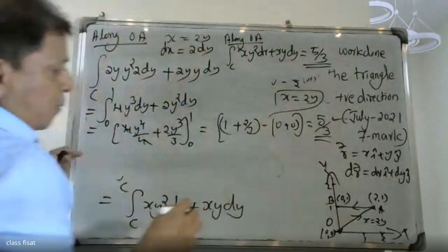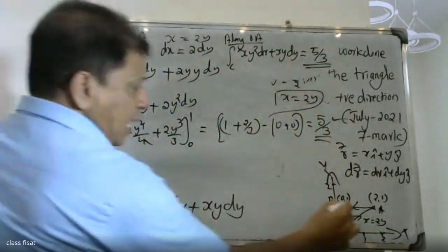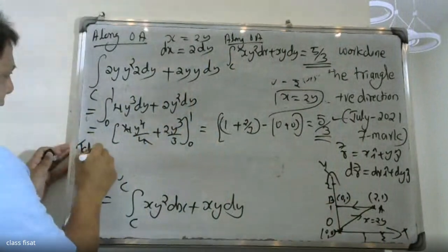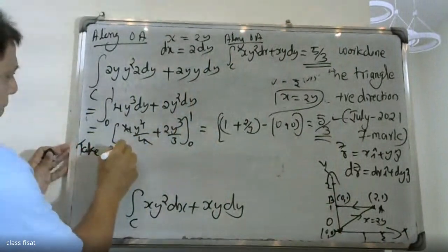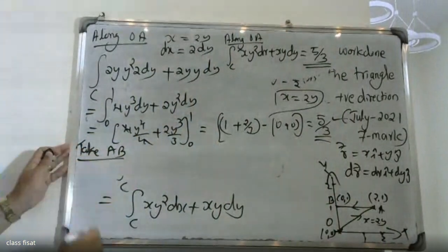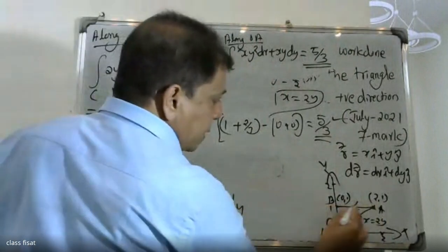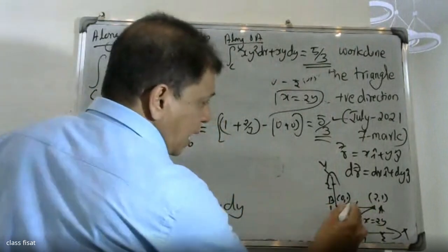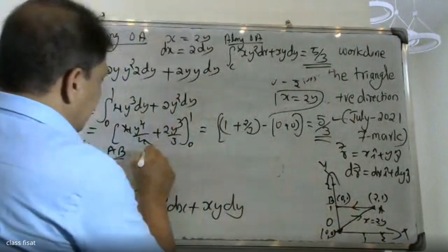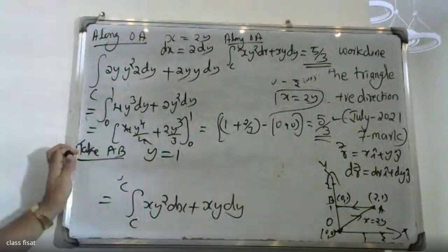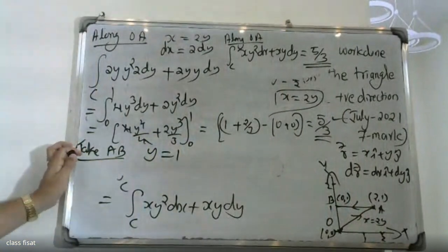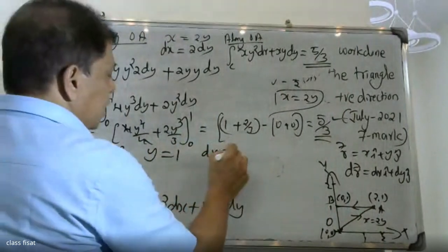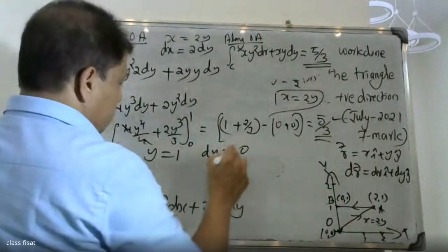Now take path AB. AB goes from A to B. Along AB, y is equal to 1 and dy is equal to 0.